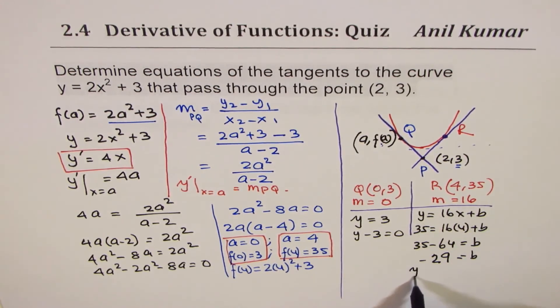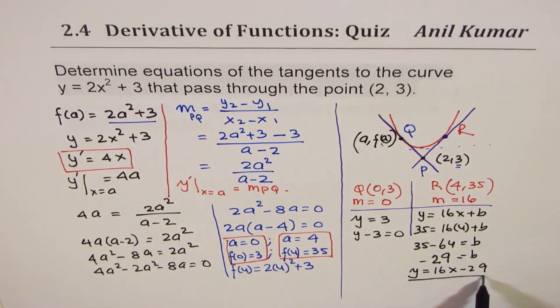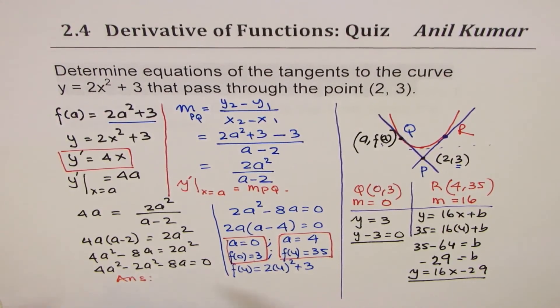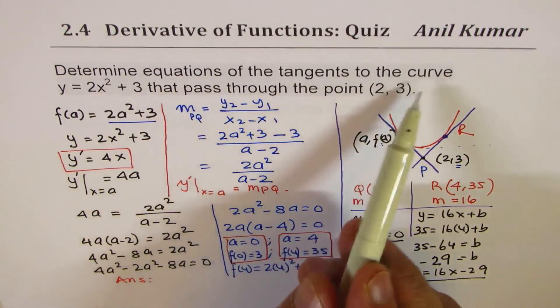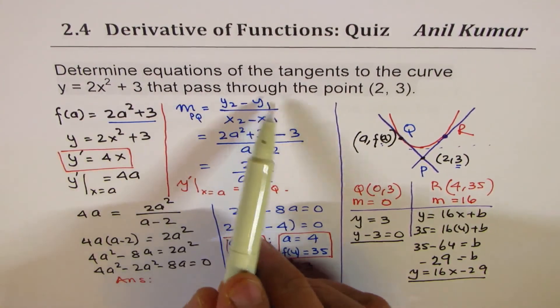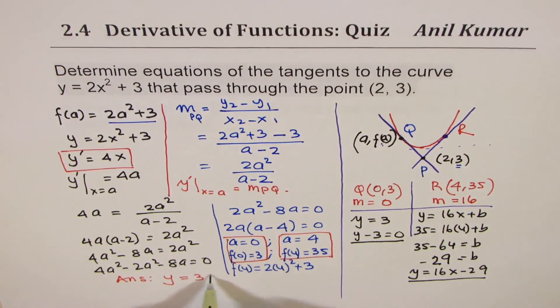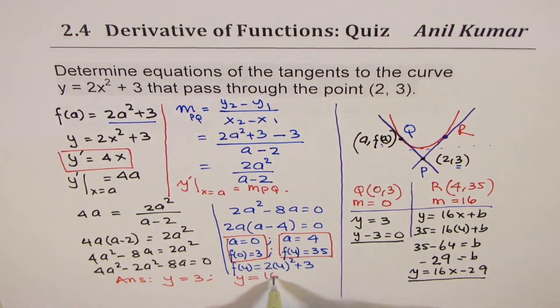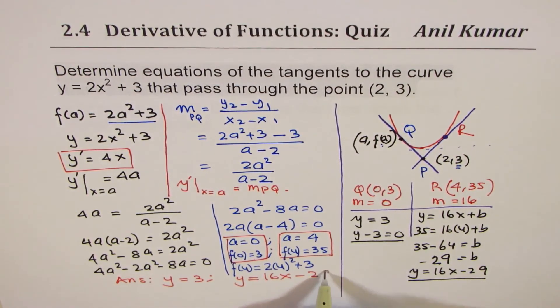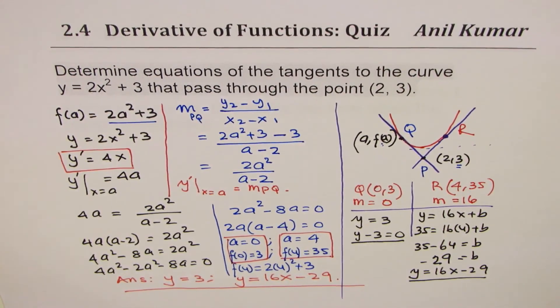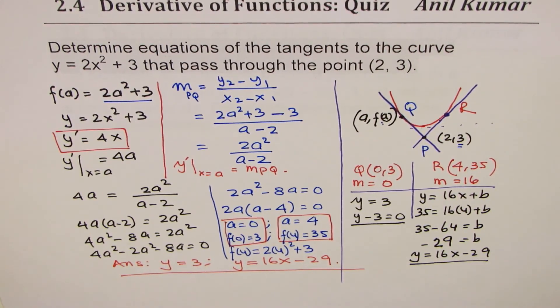So these are the two equations of tangents to the curve. So we can write down our answer that the equations to the tangents to that curve that pass through the point (2, 3) are y equals 3 and y equals 16x minus 29. So that is how this kind of question can be solved.